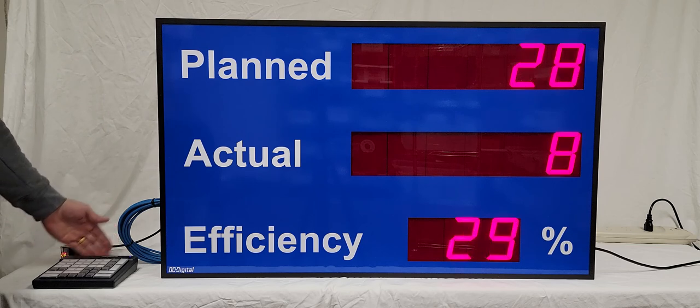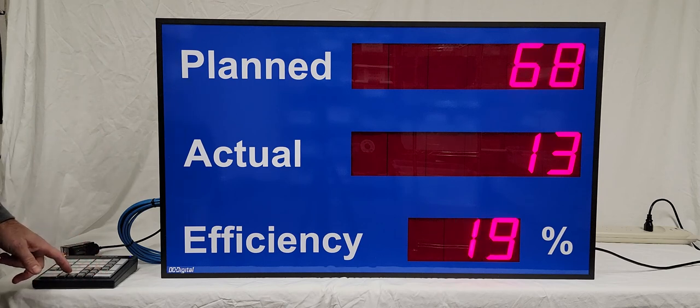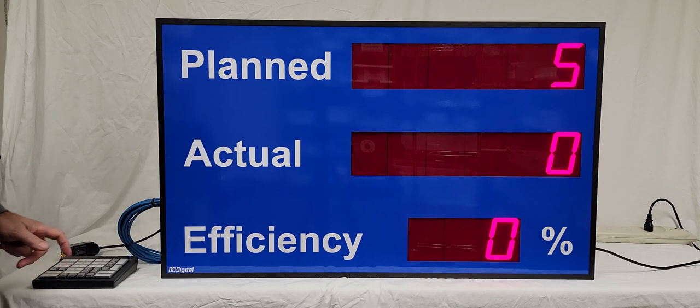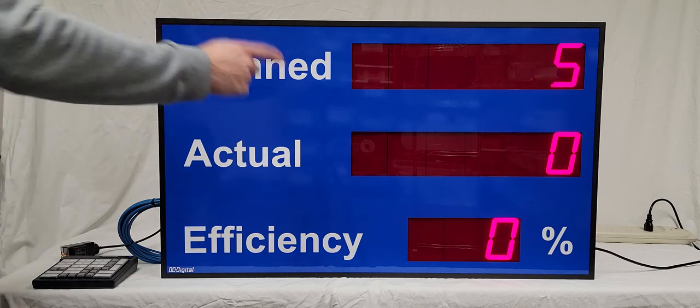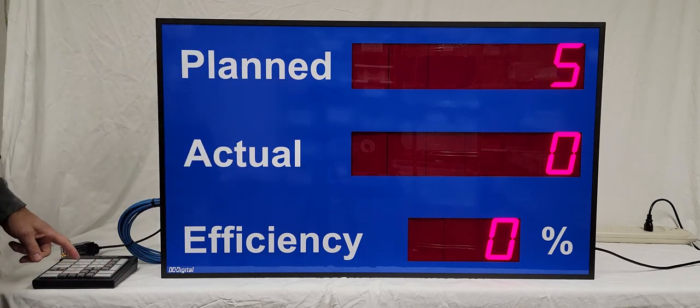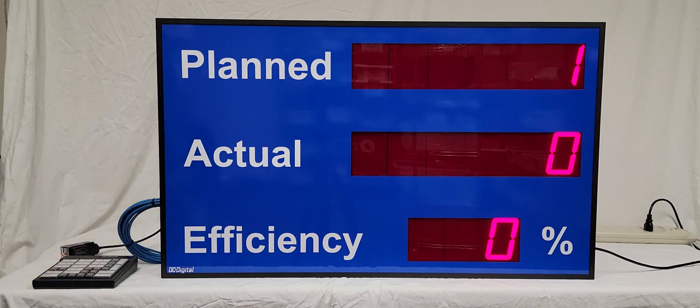Now I'll set parts per minute. When I hit that, it shows the last value you set and clears your actual count. I'm going to put in 52 parts per minute and hit enter. You'll see it calculate at the pace of 52 parts per minute.